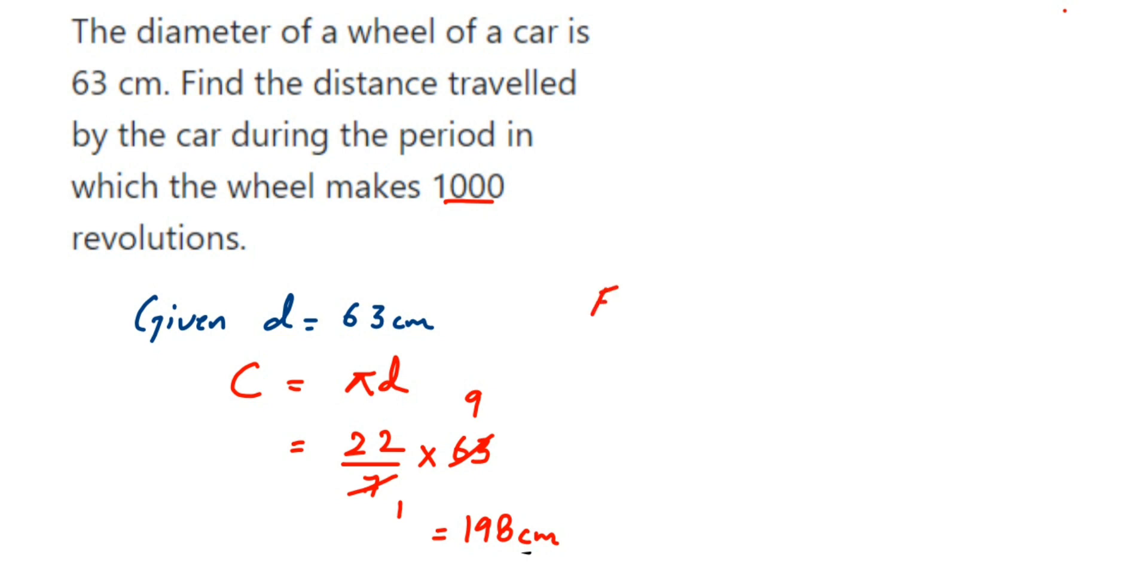Therefore, distance covered or distance traveled in 1000 revolution is equal to - we have to just multiply with 1000 - is equal to 198 multiplied by 1000.